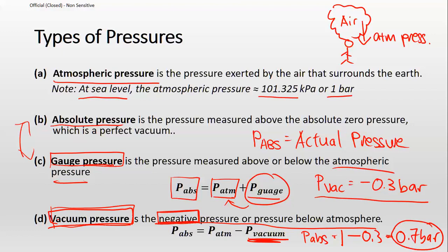The general idea is correct: absolute pressure must always be positive — the actual pressure must always be positive. But if we are expressing something relative, like gauge or vacuum pressure, then it can be negative.